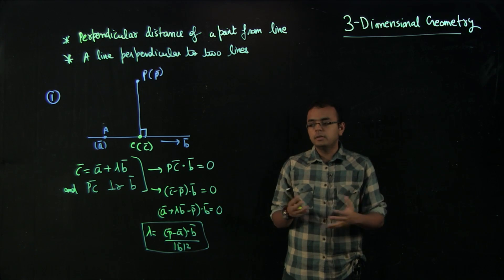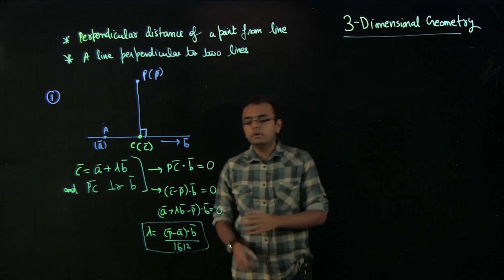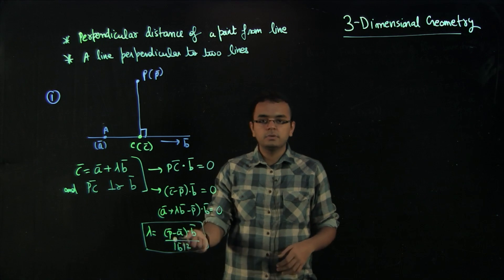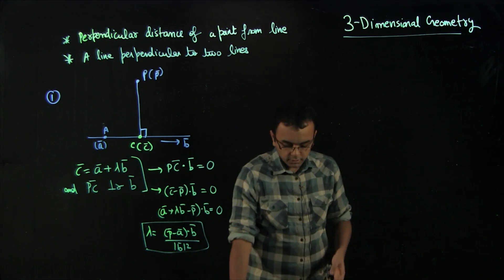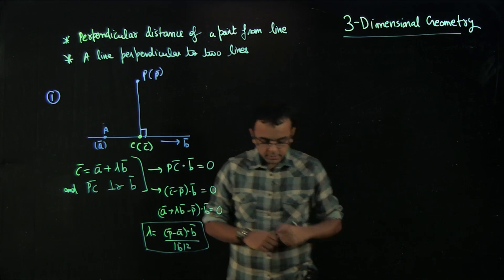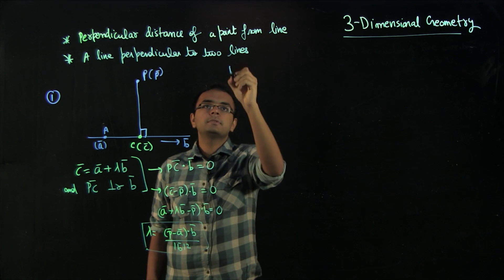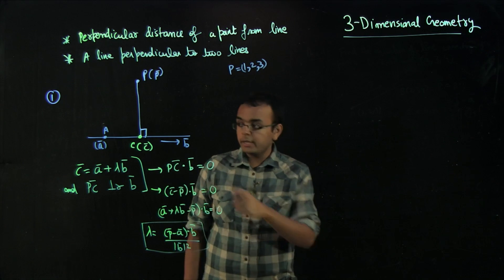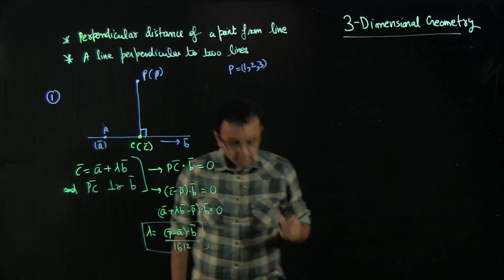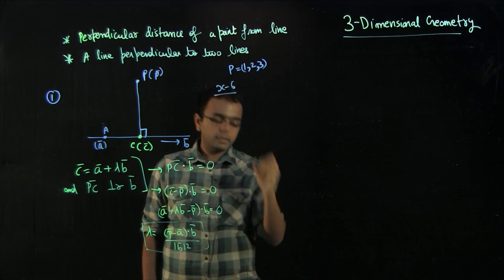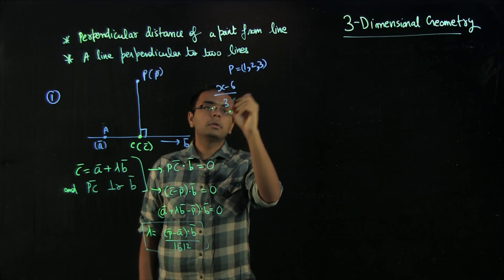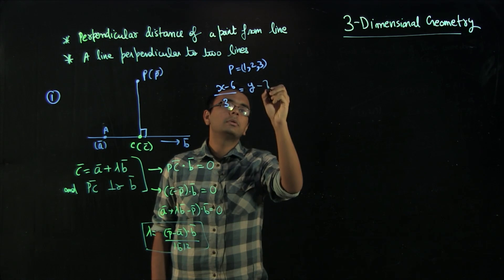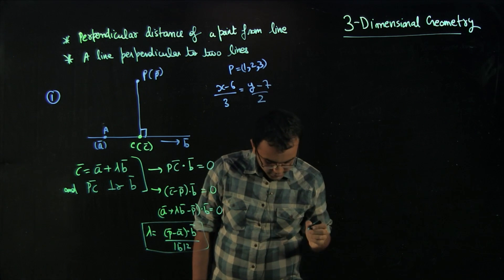You can solve this equation using the associative property — open the brackets and rearrange to get lambda. Let us do a problem on this so you can quickly understand. Find the perpendicular distance where P is (1, 2, 3) and the line is (x−6)/3 = (y−7)/2 = (z−7)/2.